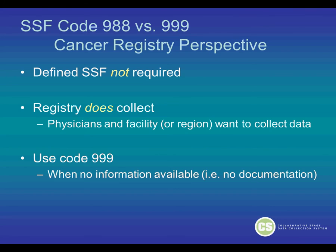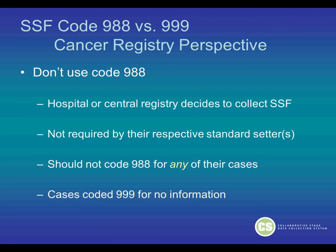If the defined Site-Specific Factor is not required, but the registry does want to collect this — the physicians, the facility, or the region want to collect this data — then you would use code 999 when there is no information available or no documentation. Don't use code 988 when the hospital or central registry decides to collect the Site-Specific Factor, even though it's not required by their respective standard setters. Cases should be coded 999 for no information available.